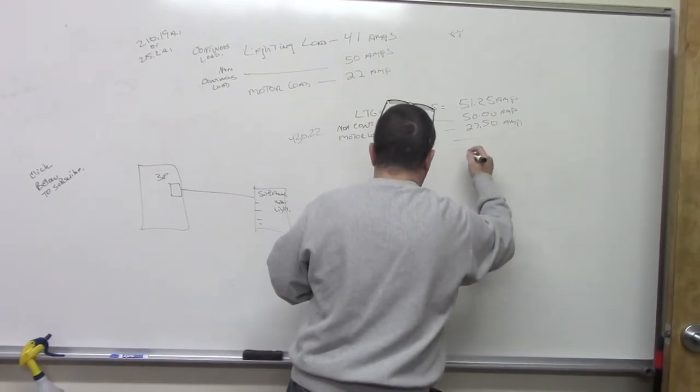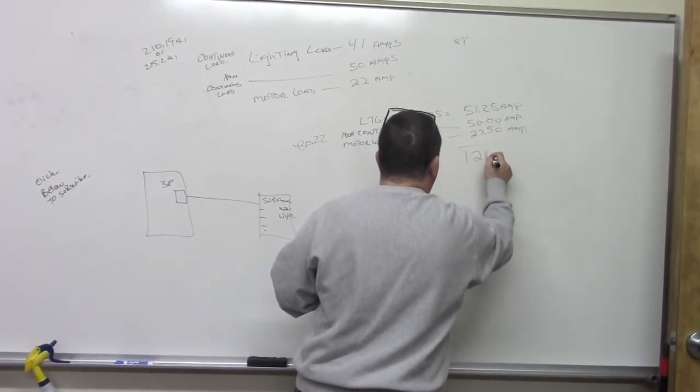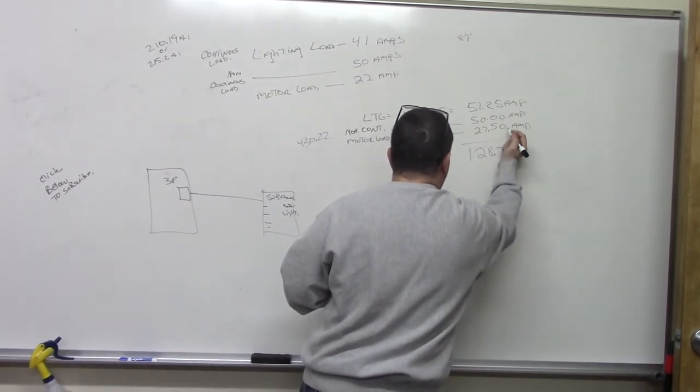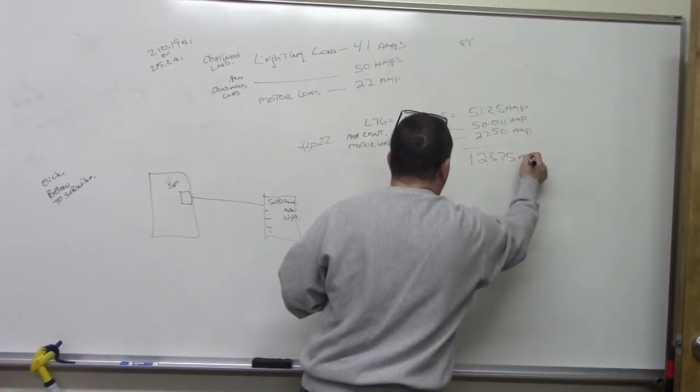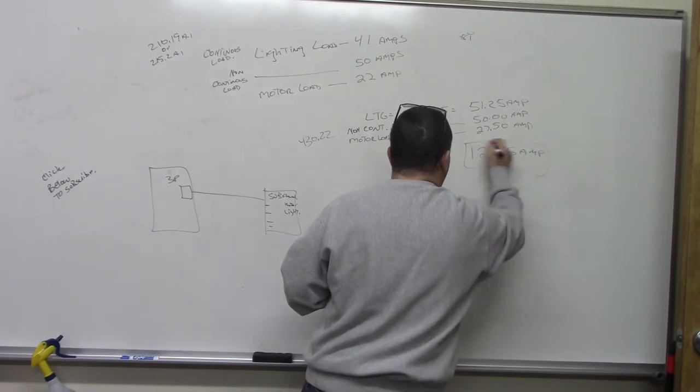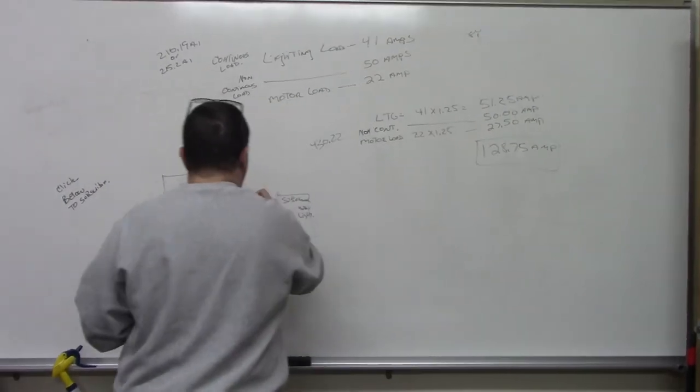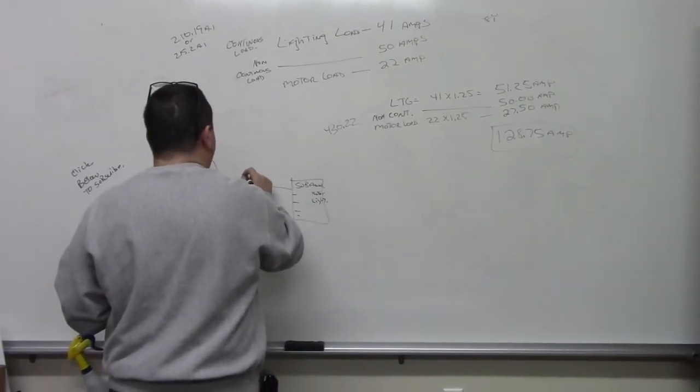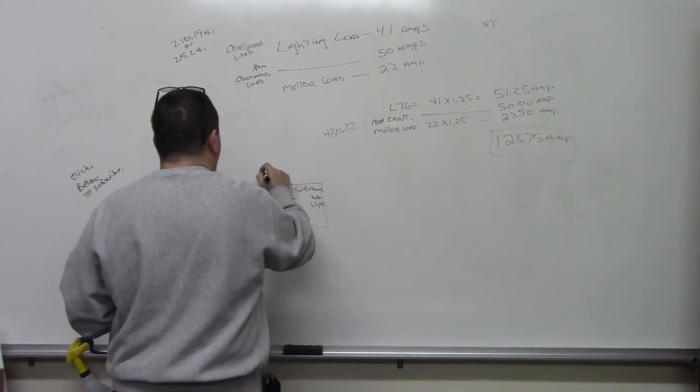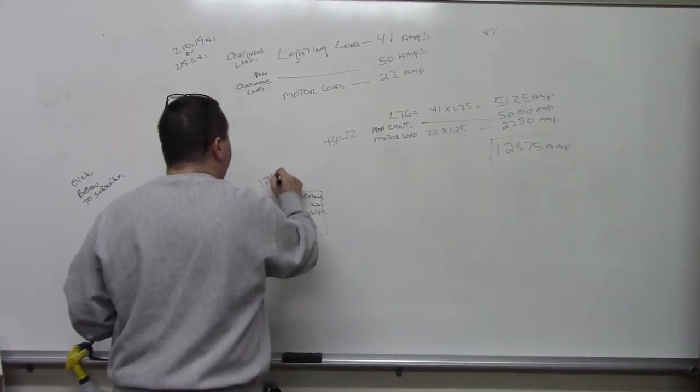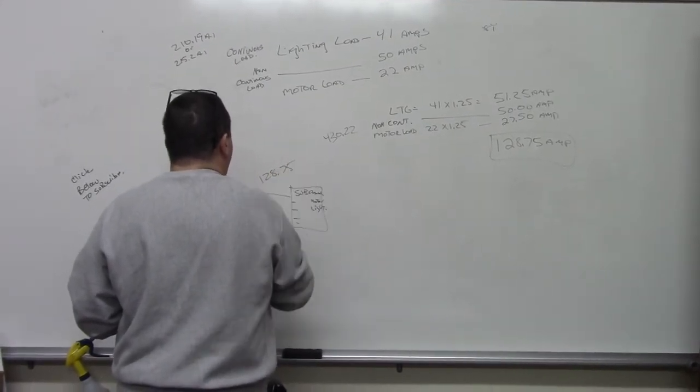And if we add it up, we come out with 128.75 amps. So this is my calculated load. So this feeder over here has to be at least 128.75.